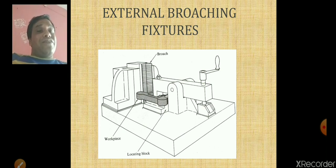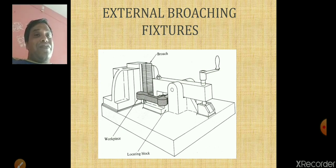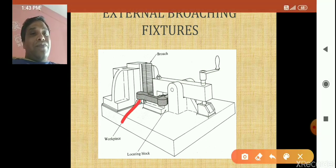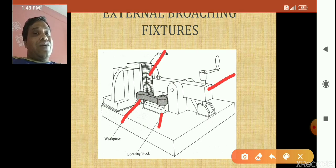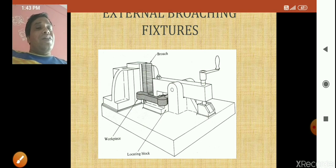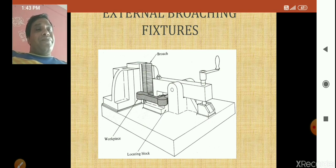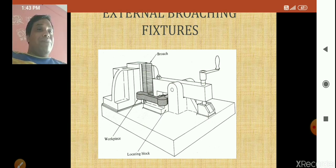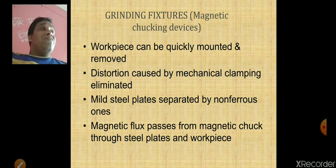Now we will see the external broaching fixture. In this fixture, there is the workpiece, a locating block, the broach, and a clamping arrangement to clamp the workpiece for the broaching operation. This is a vertical type external broaching fixture. The main use of the fixture is to hold and locate the workpiece — it does not guide the cutting tool.